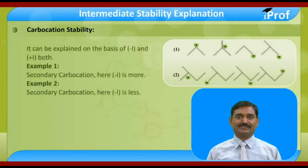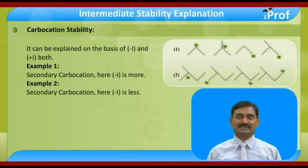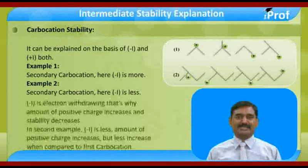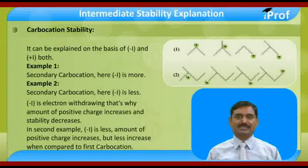We explain carbocation stability on the basis of -I and +I inductive effects. In the first example, this is a secondary carbocation but -I is more. In the second, it is also a secondary carbocation but -I is less. Since -I is electron withdrawing, the amount of positive charge increases and stability decreases.